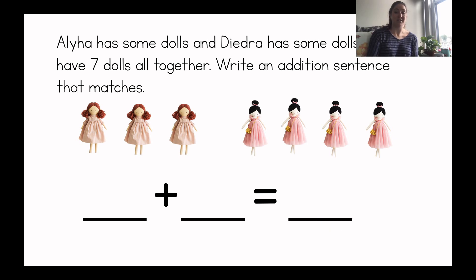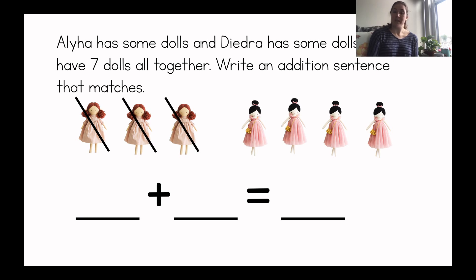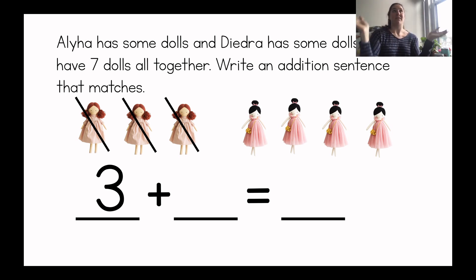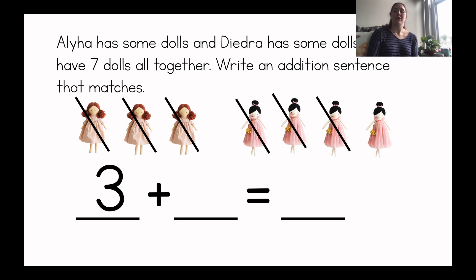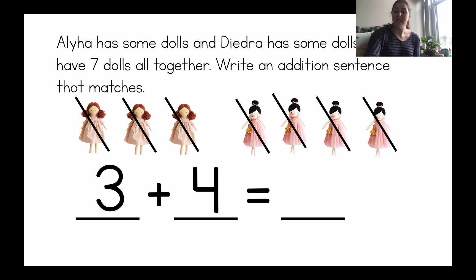So first, I'm going to count the dolls that Aaliyah has, and then I'll write the number. So Aaliyah has one, two, three dolls. So I will write a three, because I see that Aaliyah has three dolls. I wrote a three; now I'm adding the number of dolls that Deidre has, because I see that there are seven all together. So I'm going to count how many dolls Deidre has. I'll cross them off as I count. One, two, three, four. So Deidre has four dolls, so I will write a four.